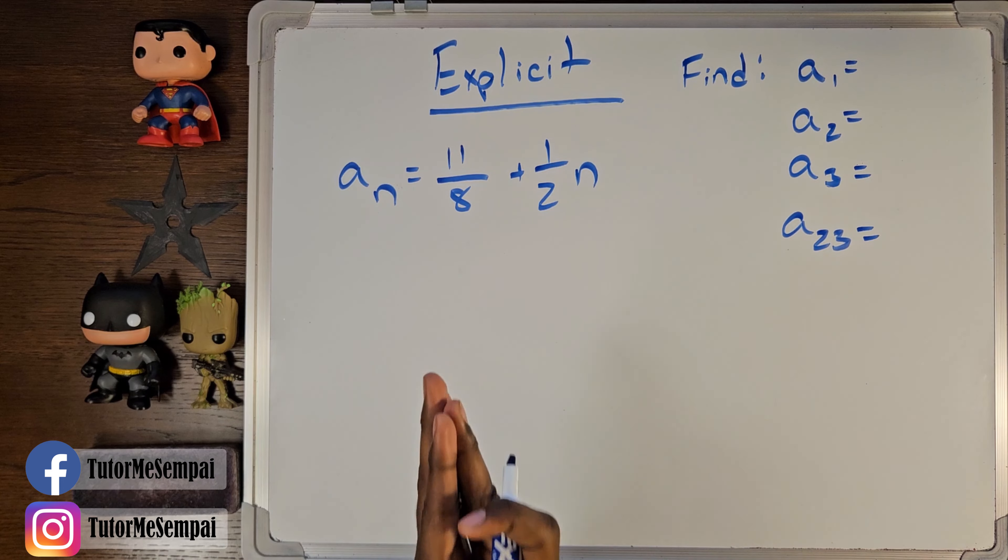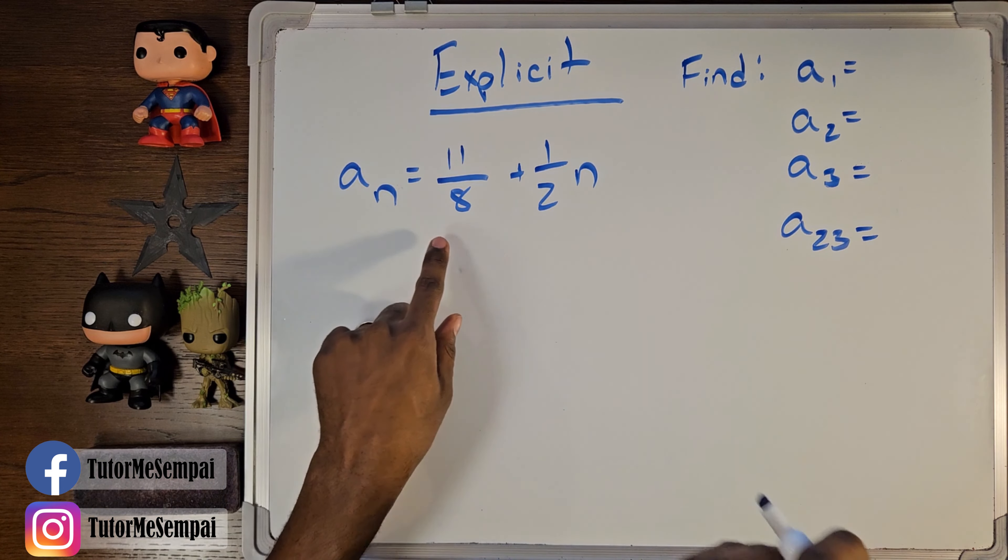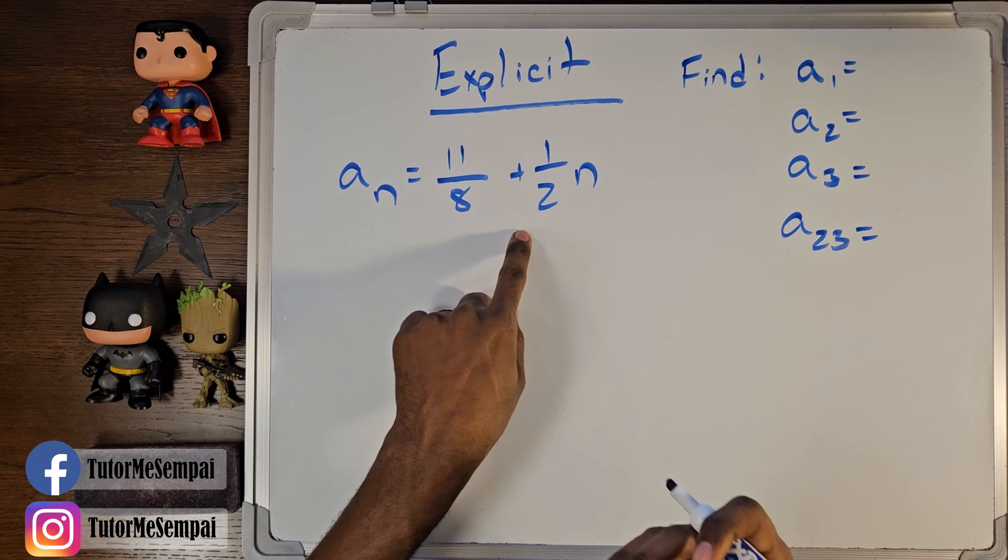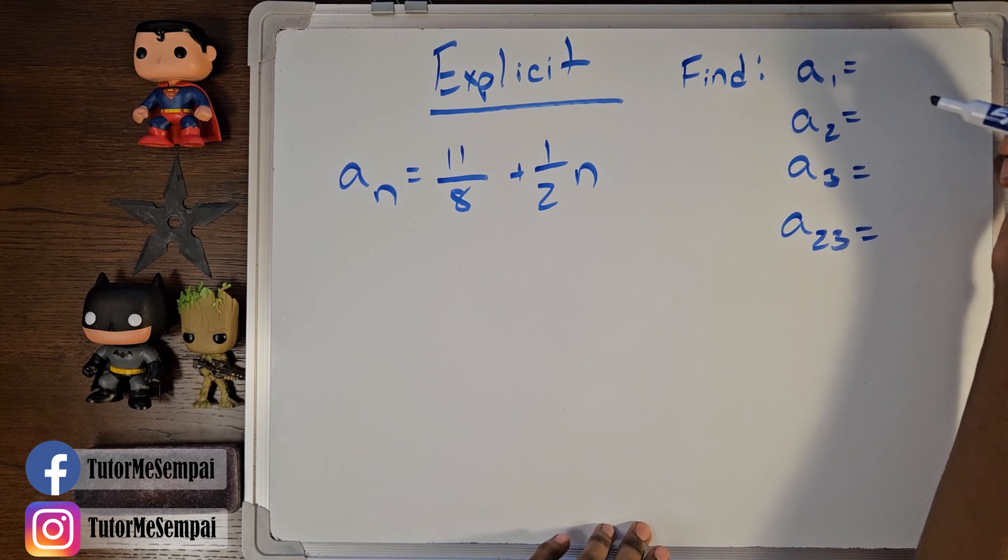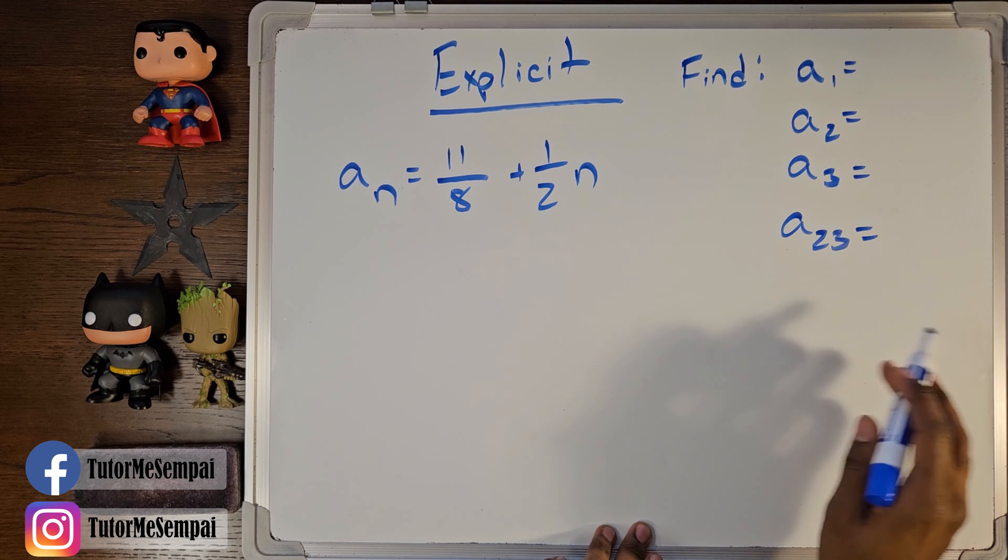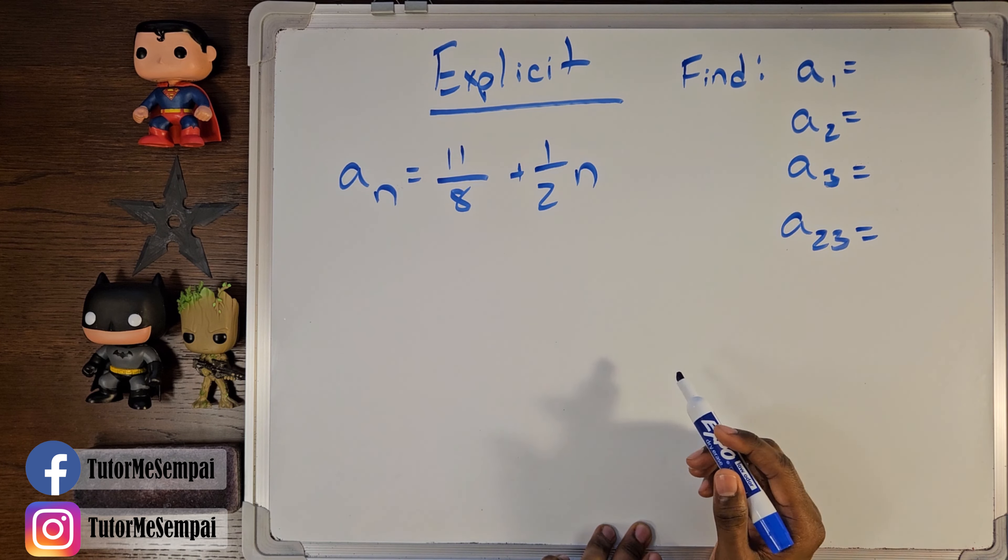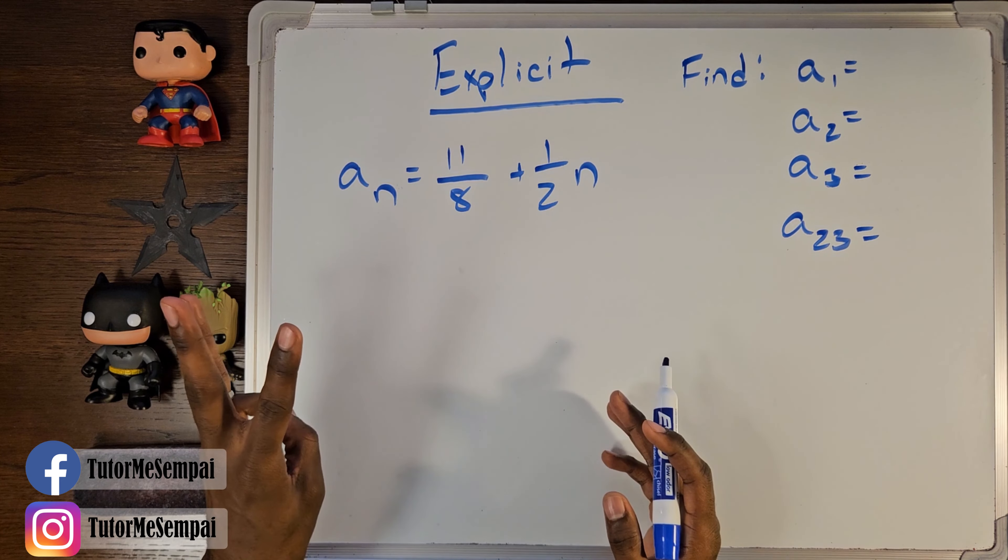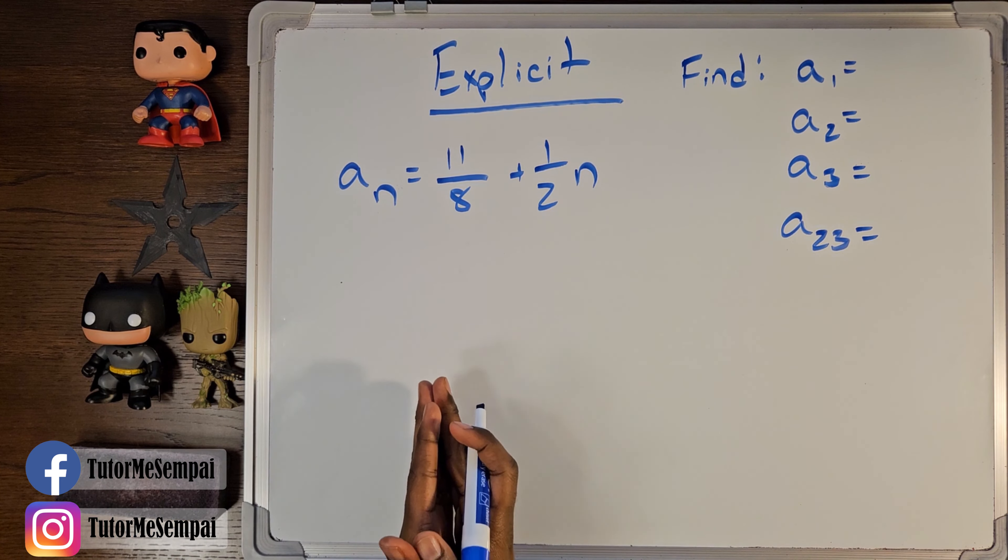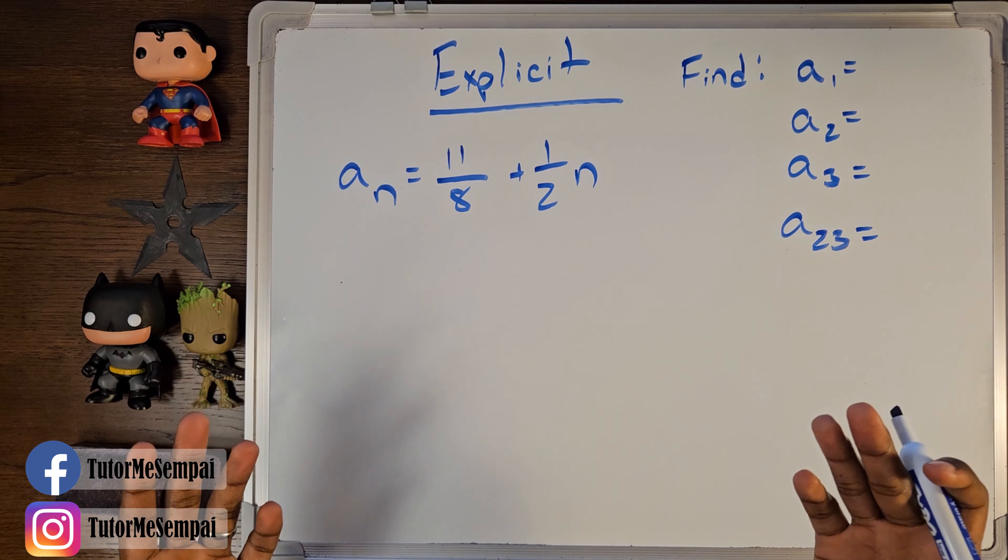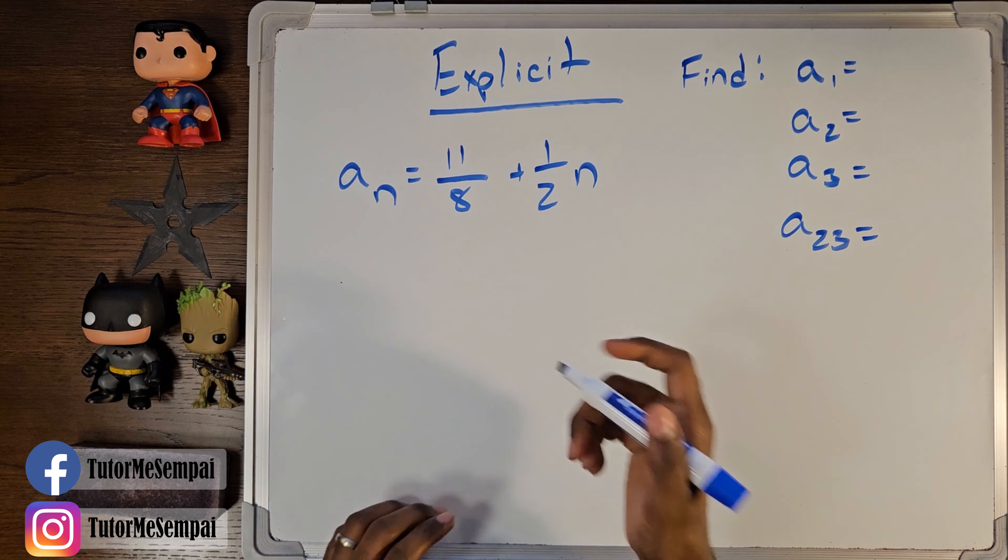We're going to be starting with our explicit formula here. In this example, we have a sub n equals 11 over 8 plus 1 half n. This is our explicit formula, and we want to find our a1, a2, a3, and just to throw something out there, our a23. So, pretty much find our first three terms, and then find our 23rd term. If you recall, in order to find our a sub 1 or an nth term, all we have to do is plug in our n wherever we see it.